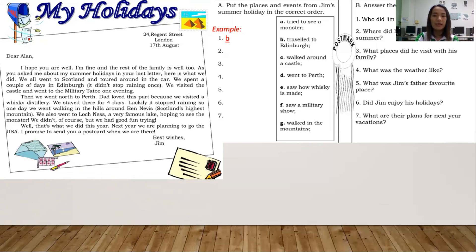Now let's go to Part B of your activity: answer the questions. Number one — who did Jim send the letter to? The answer is Alan. Okay, so that's all for this video, and I hope that this will help you answer your activity. See you again next time, bye!